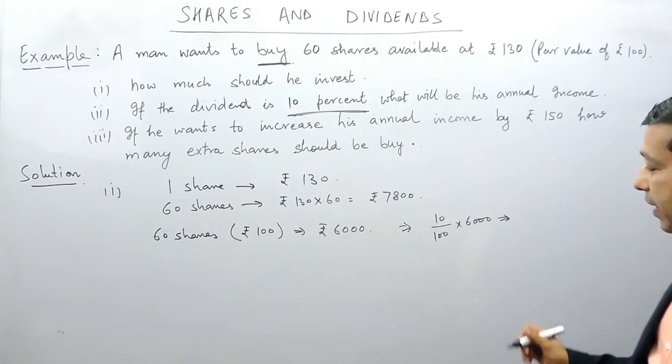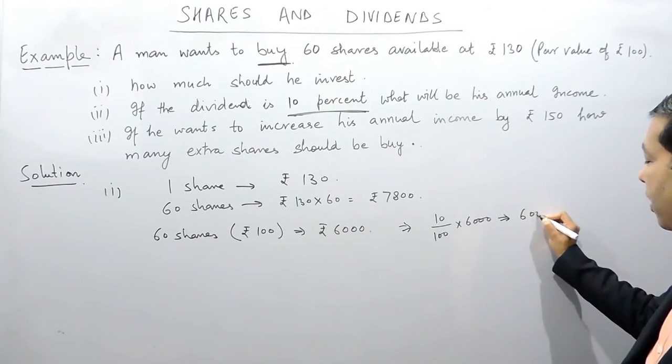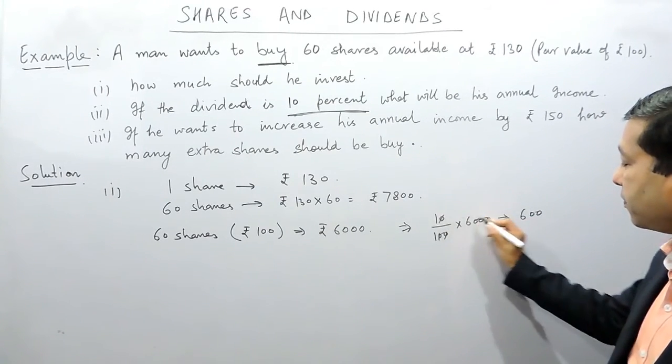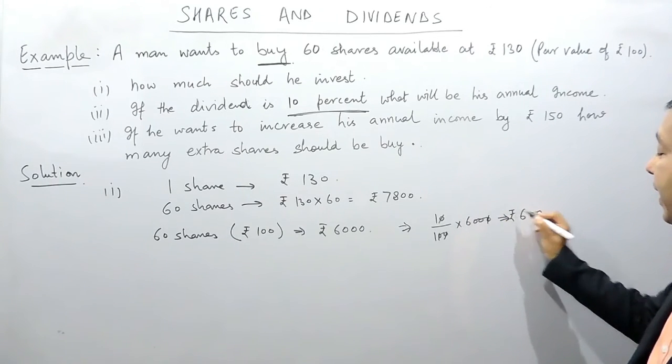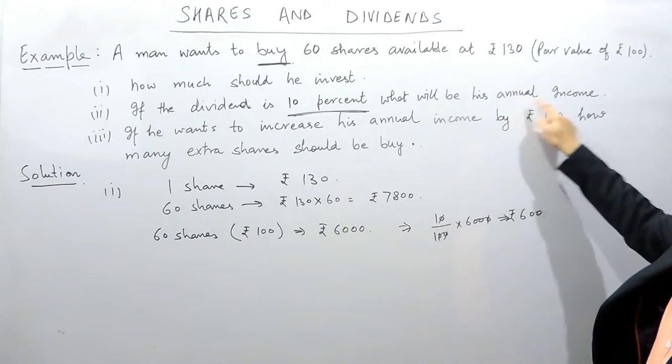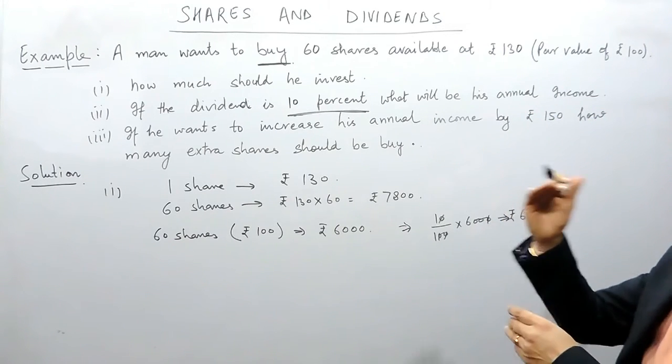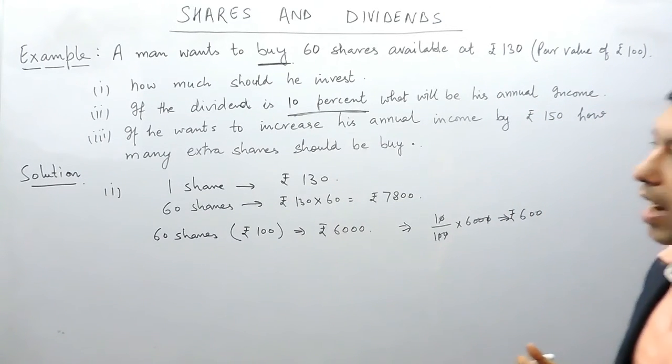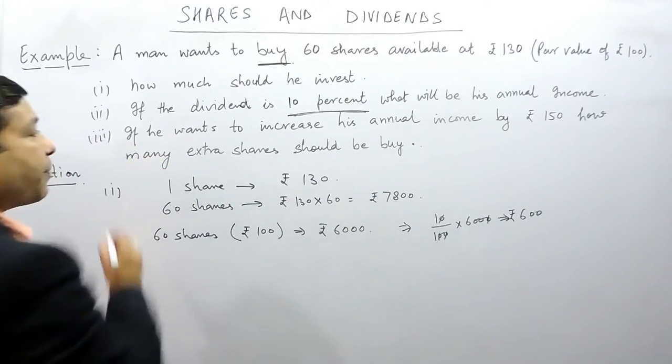That means 10% of rupees 6000 is paid by the company and that comes out to be rupees 600. So the company is giving rupees 600 as the dividend for the annual income. So the man receives rupees 600 as the annual income.